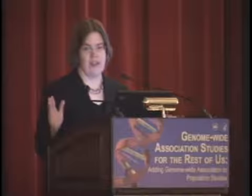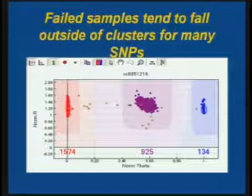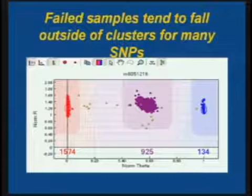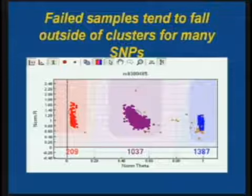Data deposit registries like dbGaP are probably going to have filtered and unfiltered versions of the data. The unfiltered data is really useful for trying to develop calling algorithms and QC metrics. But you want to be really cautious about analyzing the unfiltered data because there are things like failed samples lurking in there. These failed samples tend to fall outside of the clusters, and the normalization algorithms do odd things to them — sometimes making them look like they've got some intensity even if they don't.